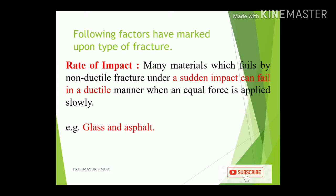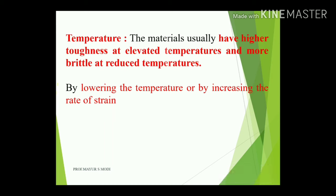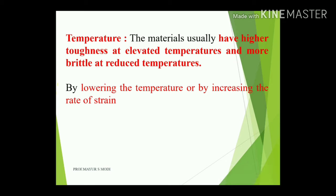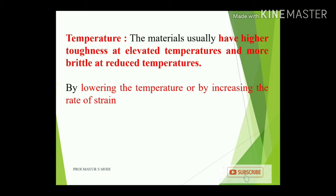Second factor is temperature. Materials usually have higher toughness at elevated temperatures and become more brittle at reduced temperatures. Increasing temperature makes materials softer; reducing temperature makes them brittle. At higher temperatures, materials have good elongation characteristics, while at lower temperatures they become brittle with little or no deformation. Temperature significantly affects the failure of materials.